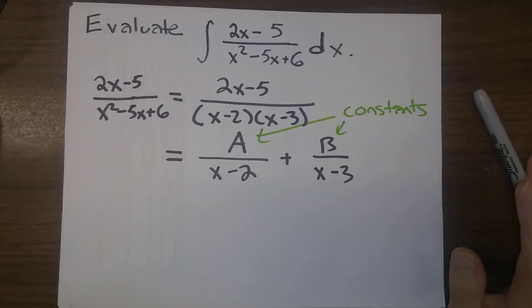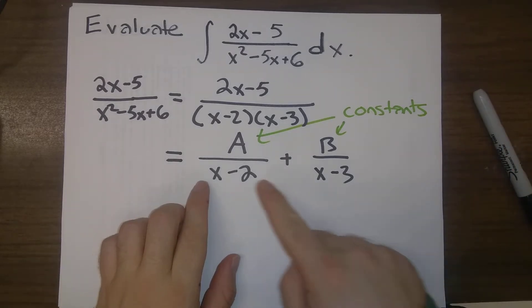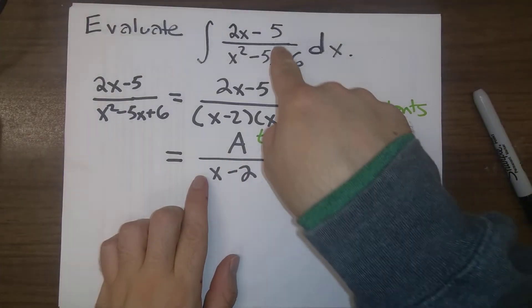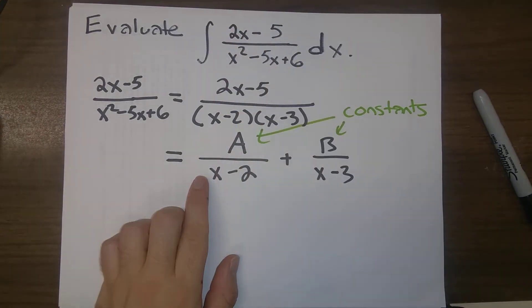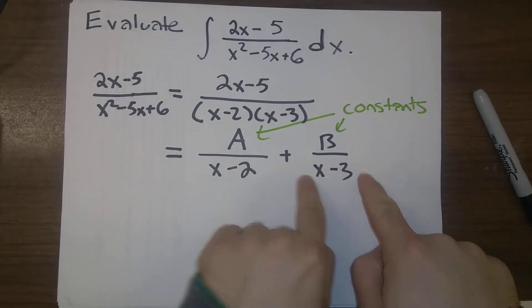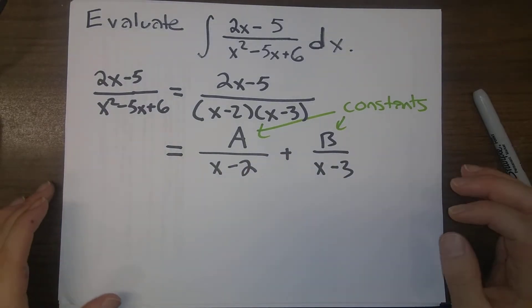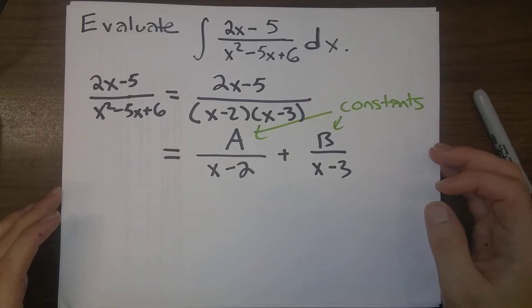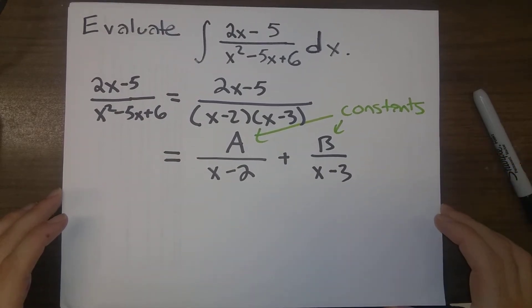Note here, the consequence is, this will be great because when we integrate, we'll replace 2x minus 5 divided by x minus 2 times x minus 3 with this plus this. And each one of these terms is going to be very easy for us to integrate.